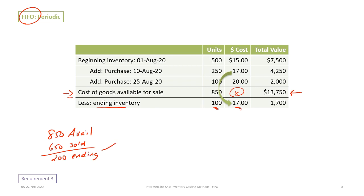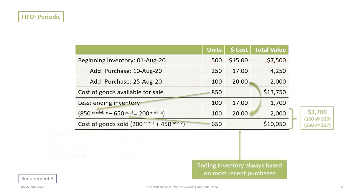Those 200 units in ending inventory are split: 100 units at $17 and another 100 units at $20. Because of the 650 units sold, the first 500 units from beginning inventory are gone. Our ending inventory consists of 100 units at $17 for a total of $1,700, plus an additional 100 units at $20 from the August 25th purchase.